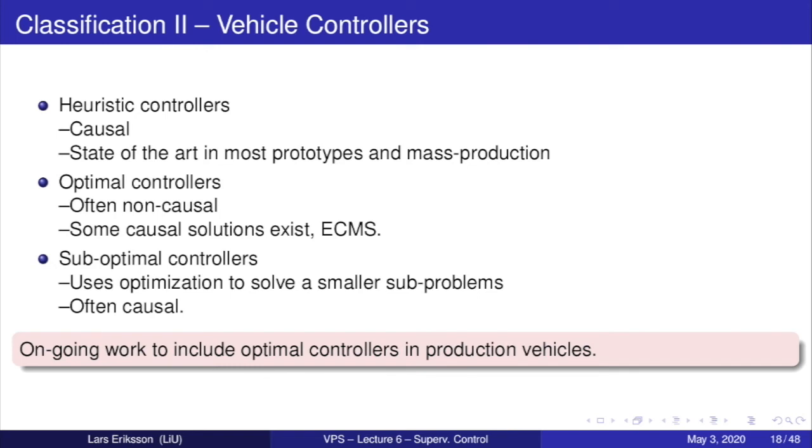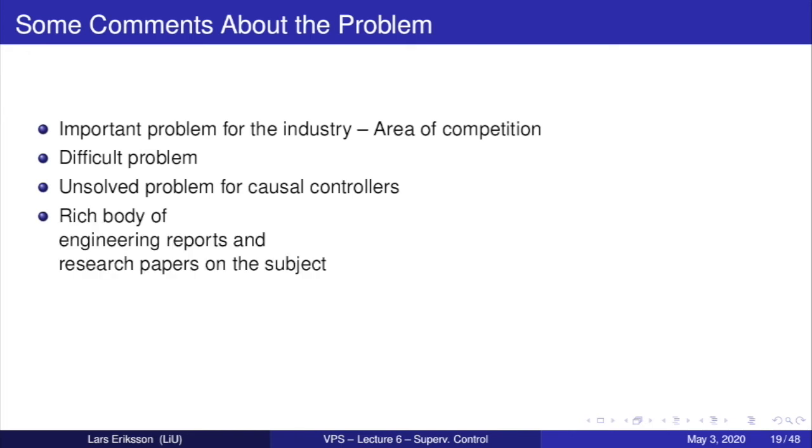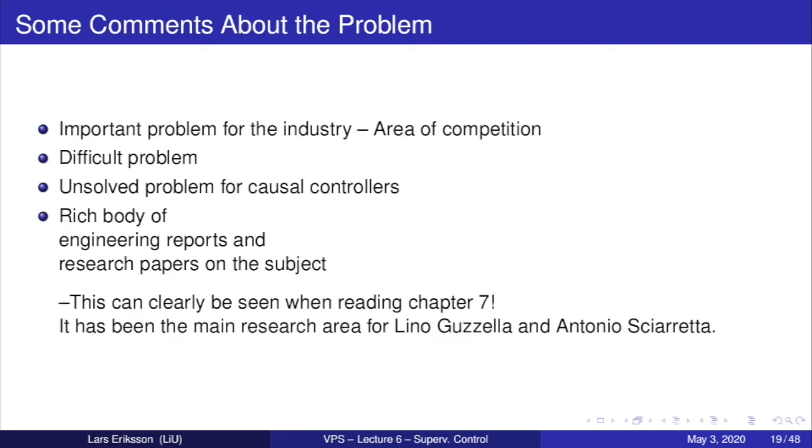There is ongoing work to include optimal controllers in production vehicles. For example, both Volvo Trucks and the Scania Truck Company have solutions that look at map information and use that to determine the driving schedule, very much like the truck extra task for hand-in assignment number two to plan an uphill and plan downhills. Some short comments about the problem: it's a very important problem for the industry, it's an area of competition. They are competing with fuel economy when they are competing for the customers. It's a very difficult problem, so there is not yet the solution to it, and there's a lot of research being done. And there's a rich body of engineering reports and research papers on the subject. And this you can clearly see when you read chapter seven. And it has also been the main research areas for Lina Guzzella and Antonio Sciarretta, the authors of the book. They work together on hybrid vehicles.